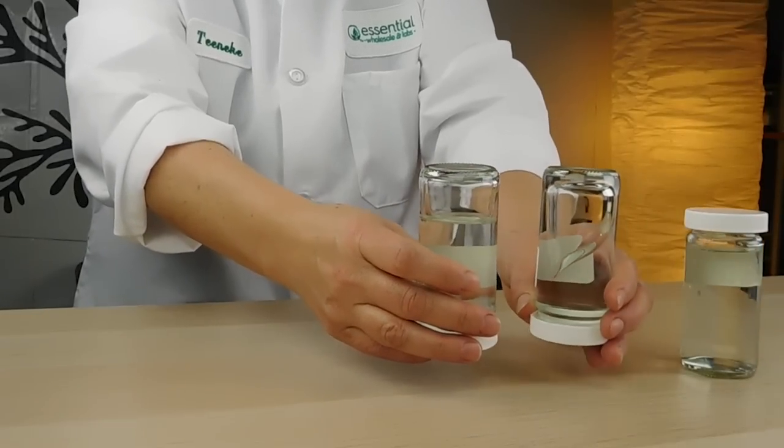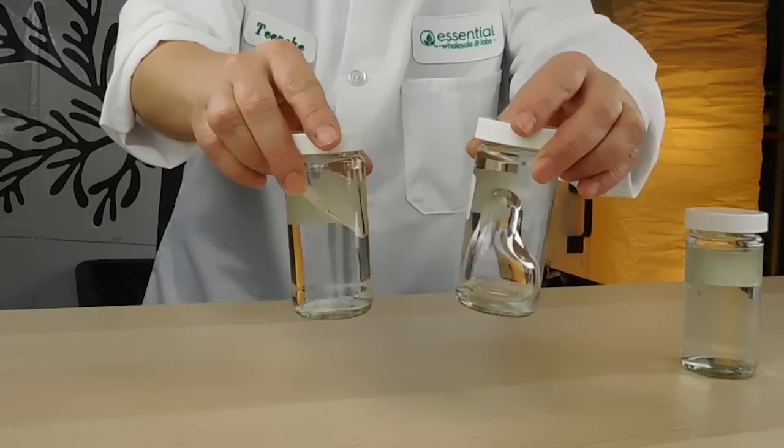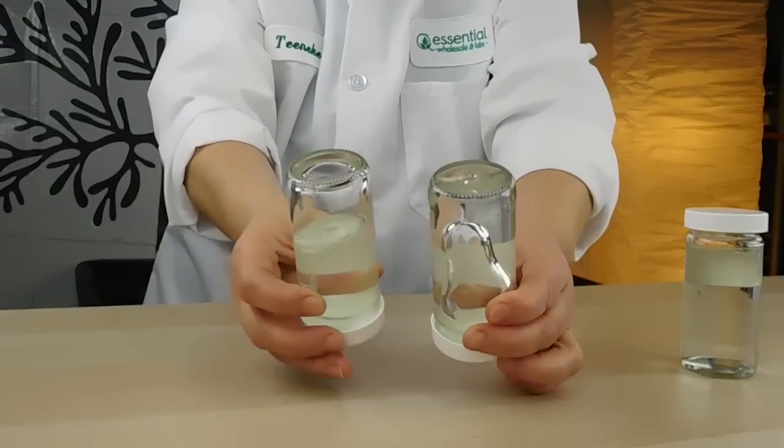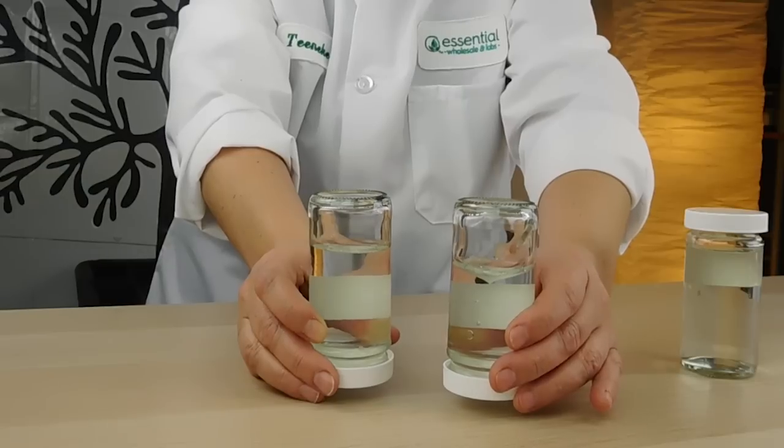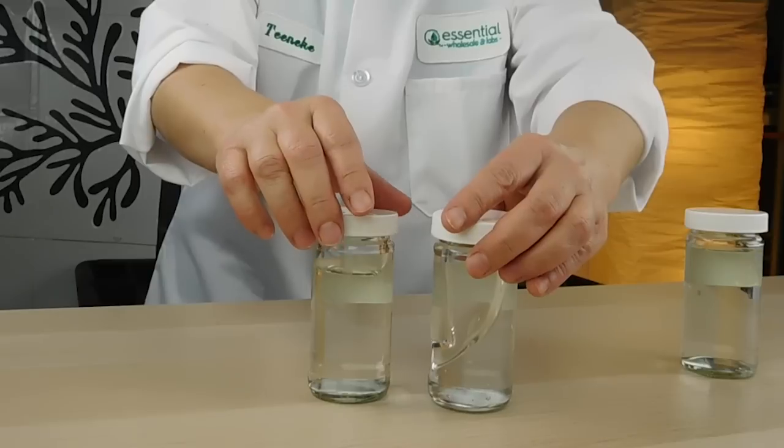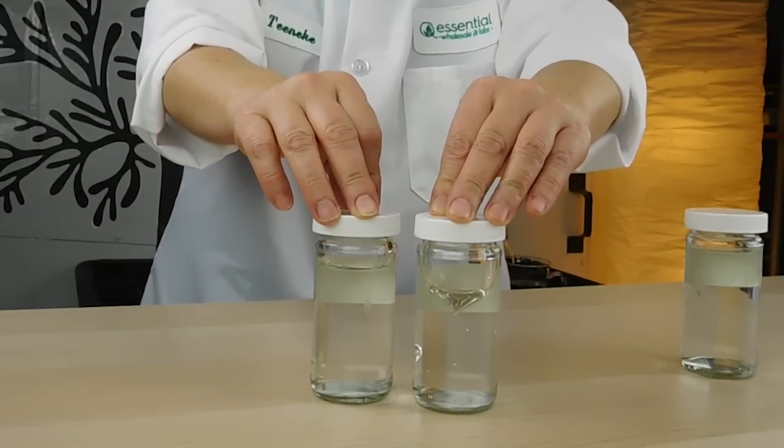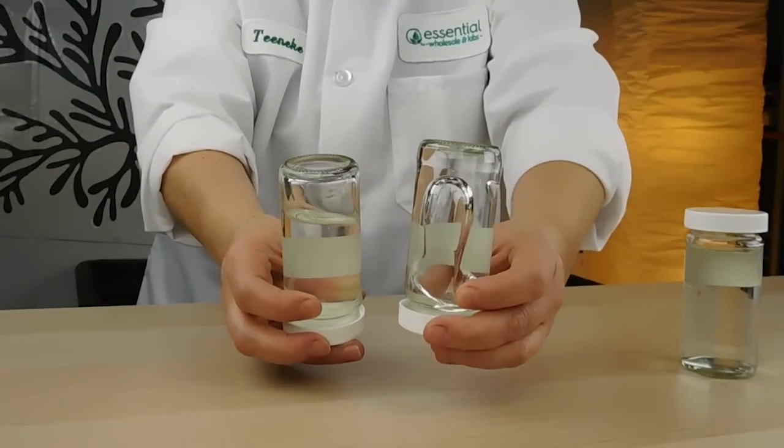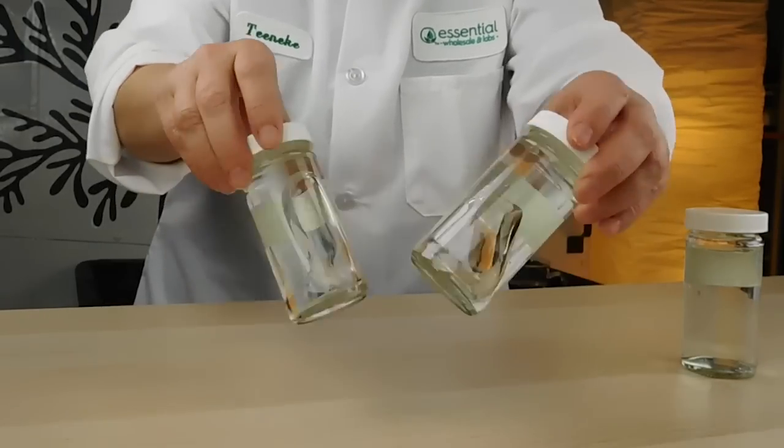You can kind of see that when we flip them upside down, you see the air bubble moves, obviously really slow in the one that we sell at a 1% solution. So really 1% is kind of the max that you can use of the hyaluronic acid that we sell. You might be able to go a little higher than 1%, but you can see how thick and viscous it really is.